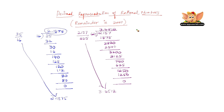Let us represent minus 17 by 8 in the form of a decimal. Let us divide 17 by 8. 8 two times gives 16, remainder is 1. 1 is not divisible by 8, so add a 0 and place a decimal point. 8 one time is 8, remainder is 2.